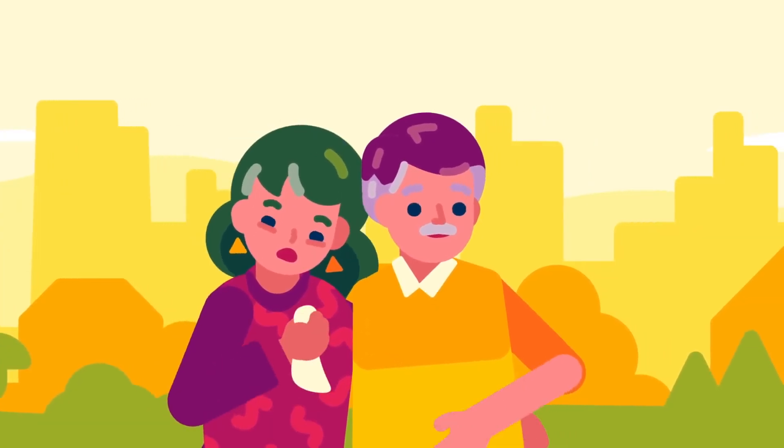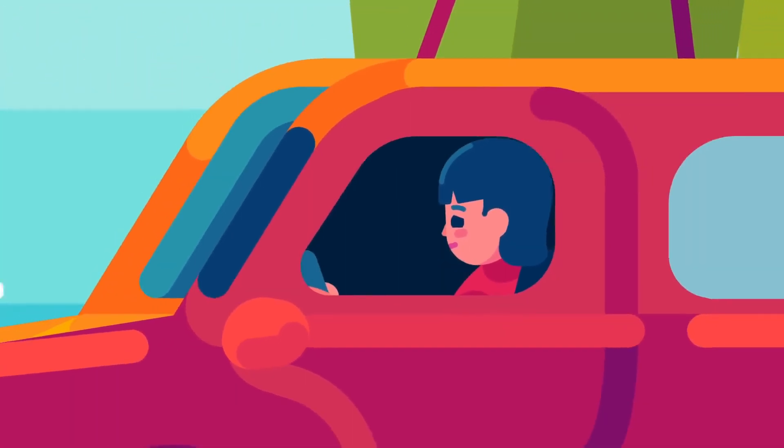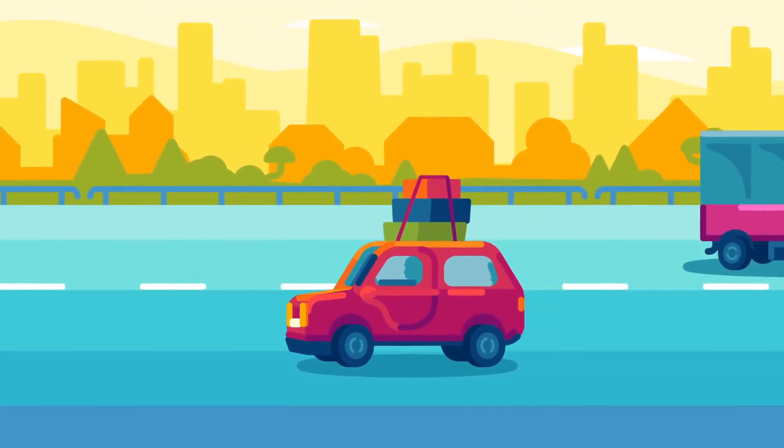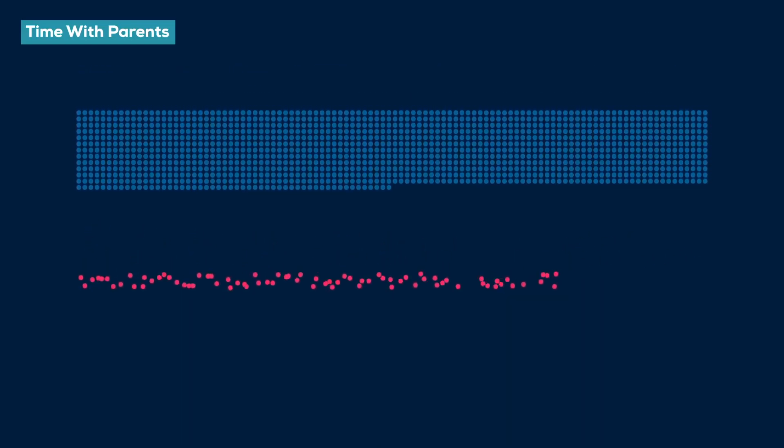But as teenagers, you probably still see them regularly, which changes as you enter your twenties, when most people move out for university, for work, or just to be on their own. If you're making an effort to be with your parents for two full weeks each year for the rest of their lives, which covers the main holidays, birthdays, and a bit extra, you still have already spent more than 90% of the time you will ever spend with them, even if they grow pretty old.